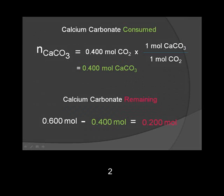To determine the number of moles of calcium carbonate consumed, we multiply the given moles of carbon dioxide by the conversion factor, which equals 0.400 moles. However, the question asks for the calcium carbonate remaining. Therefore, we take the starting amount of calcium carbonate, or 0.600 moles, and subtract the consumed number of moles of calcium carbonate, which is 0.400 moles. The remaining amount of calcium carbonate is 0.200 moles.